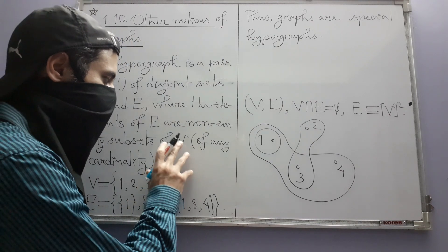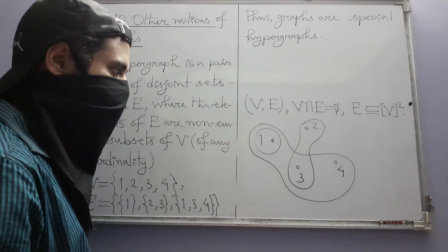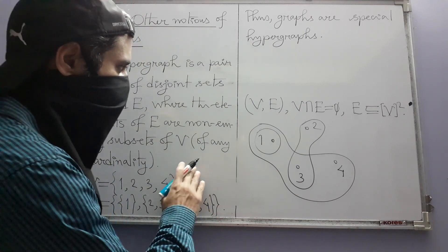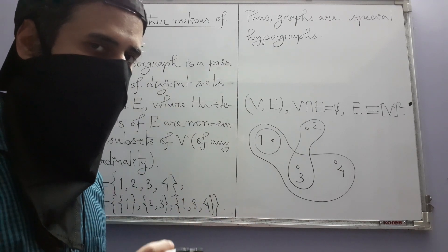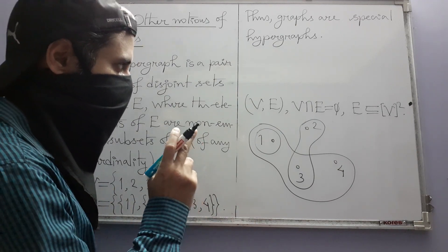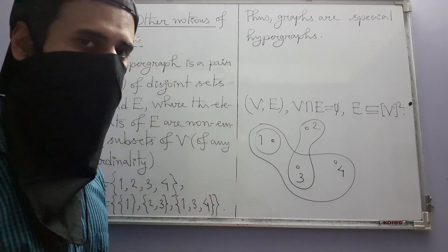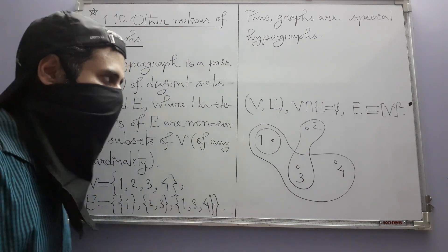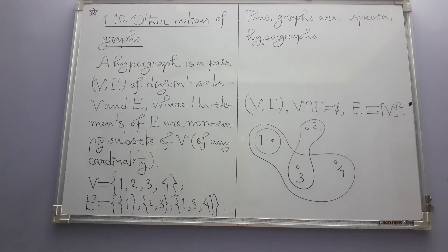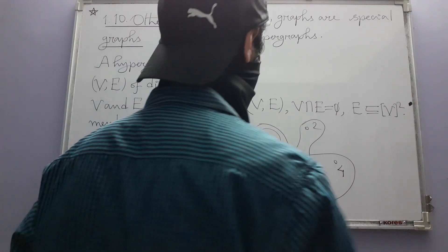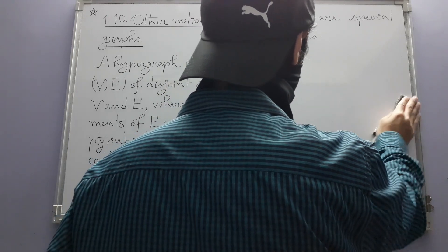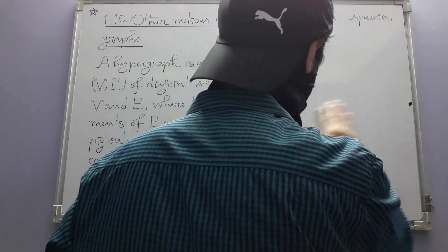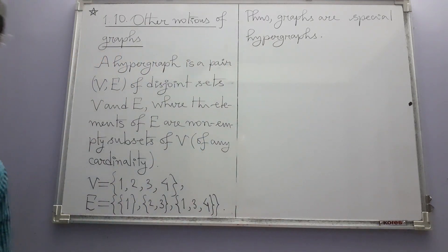Hypergraphs occur less frequently when we have applications in mind. Some other generalizations of the notion of graphs occur much more frequently, and the next one we are going to see is the notion of a directed graph, or digraph, in which the edges have directions or orientations.